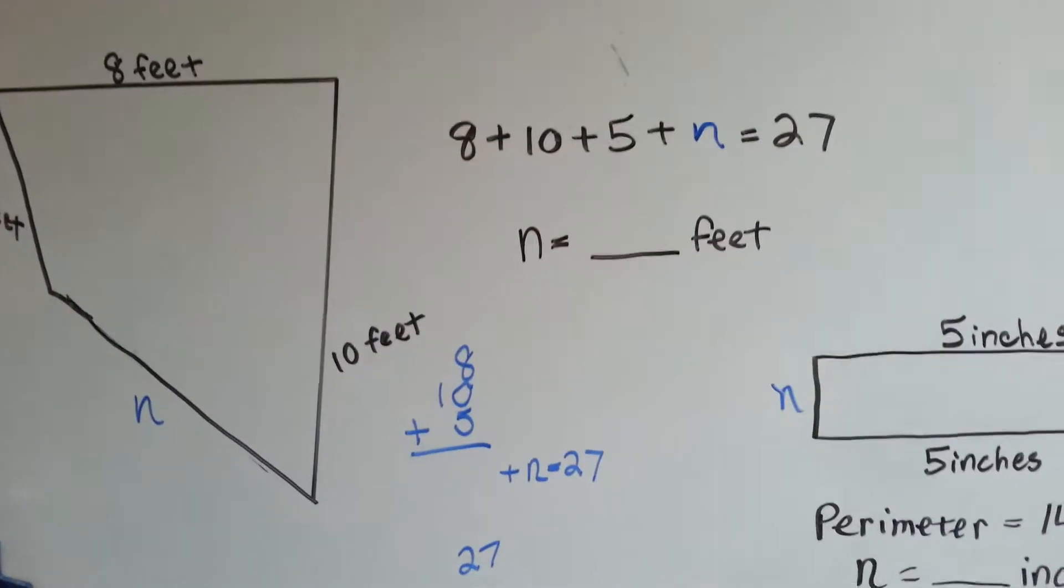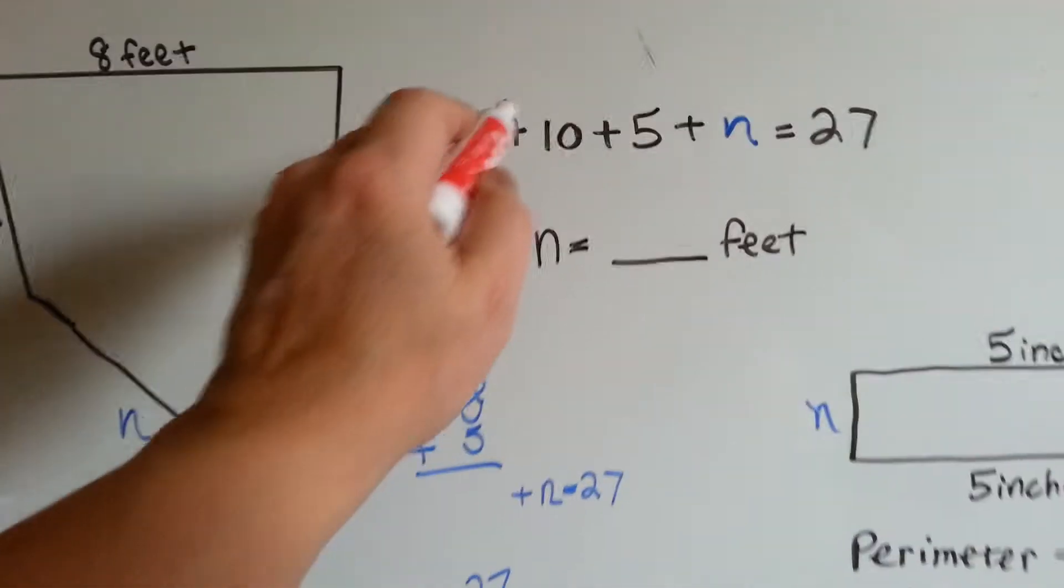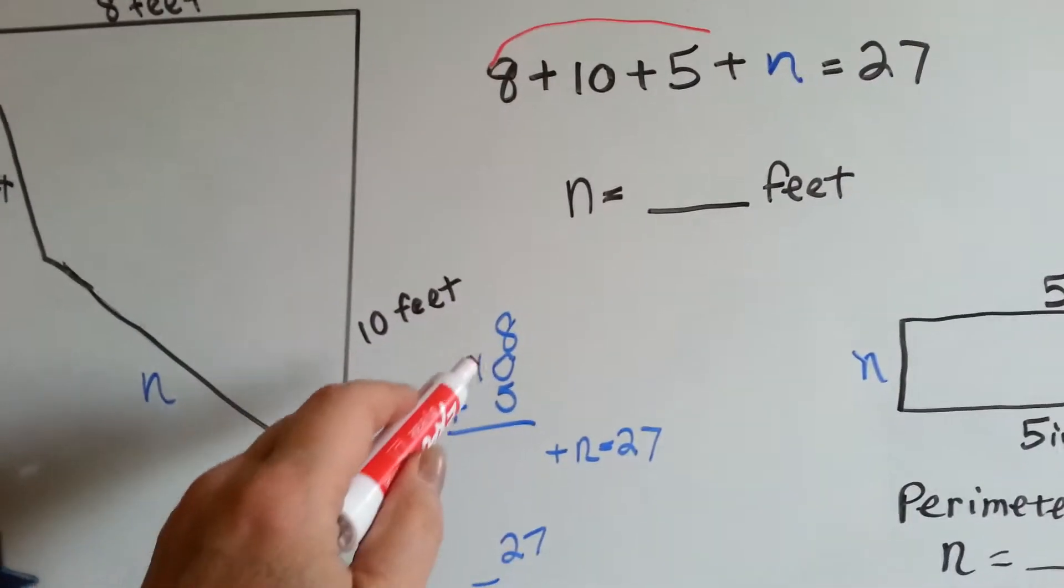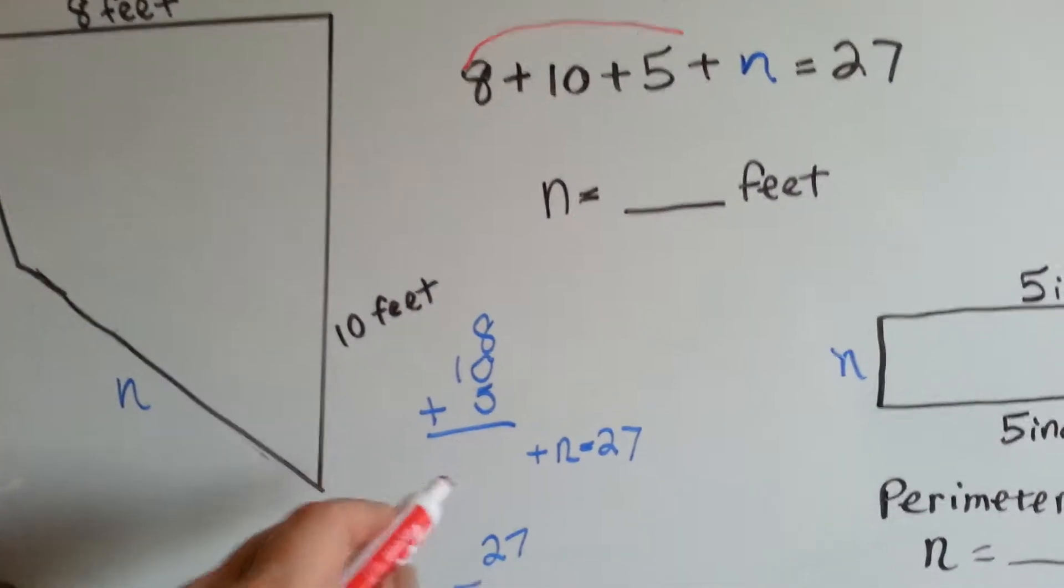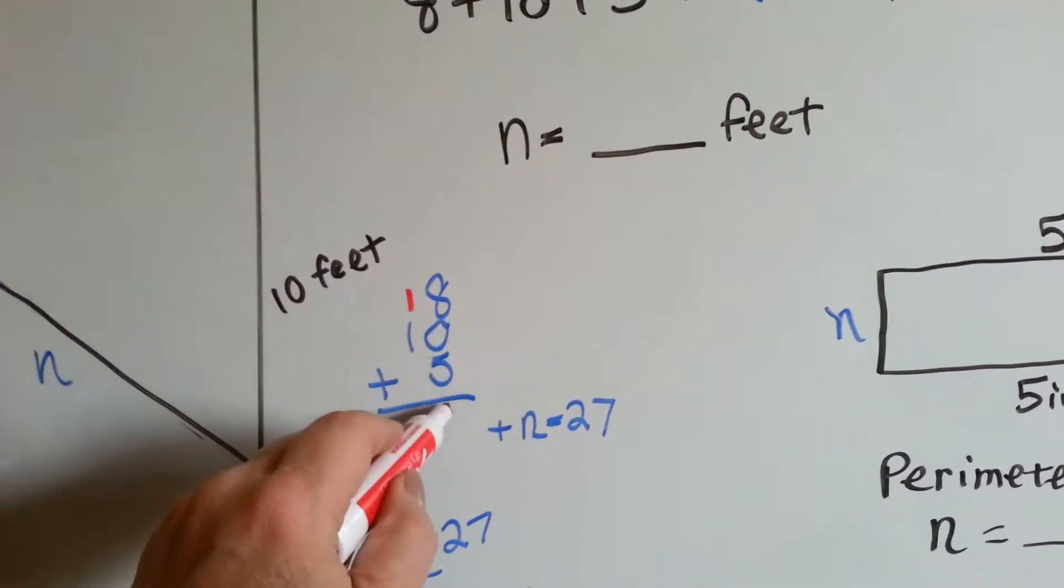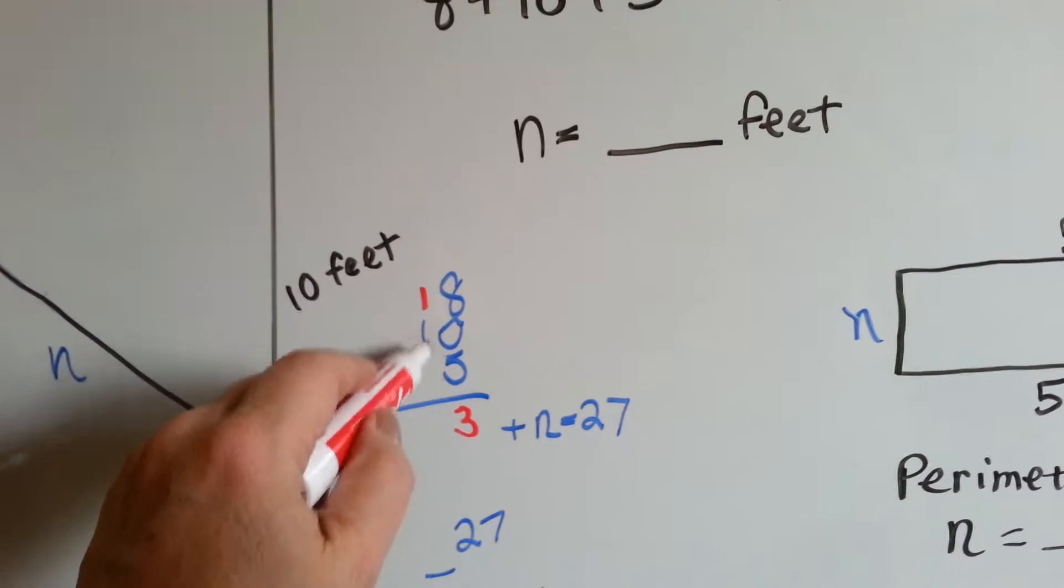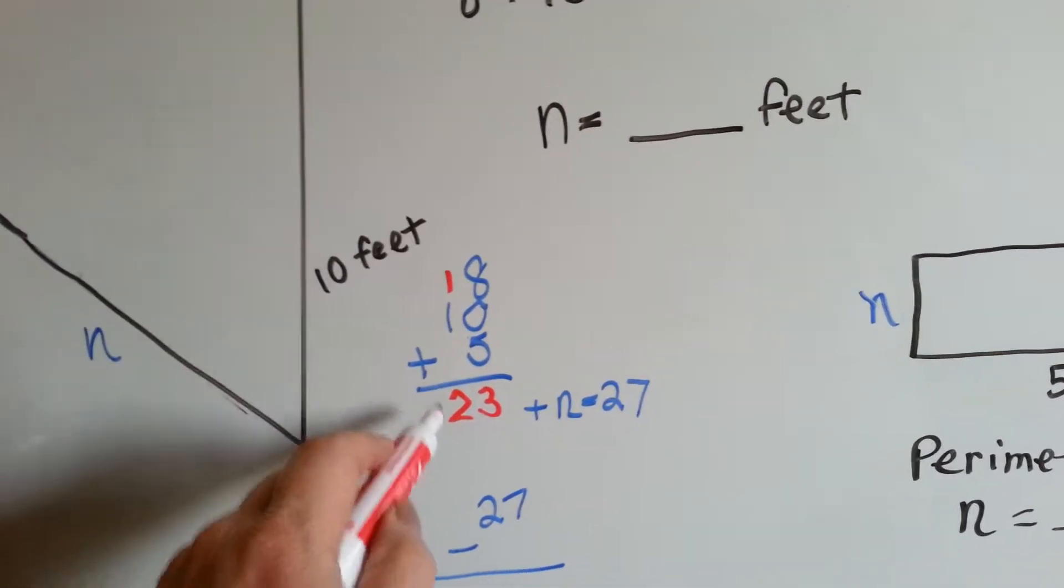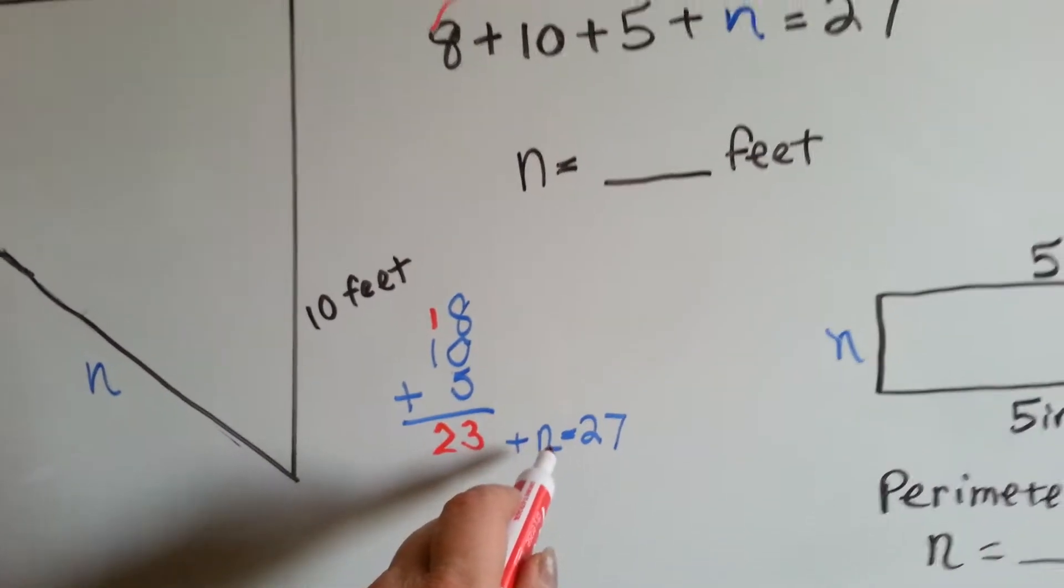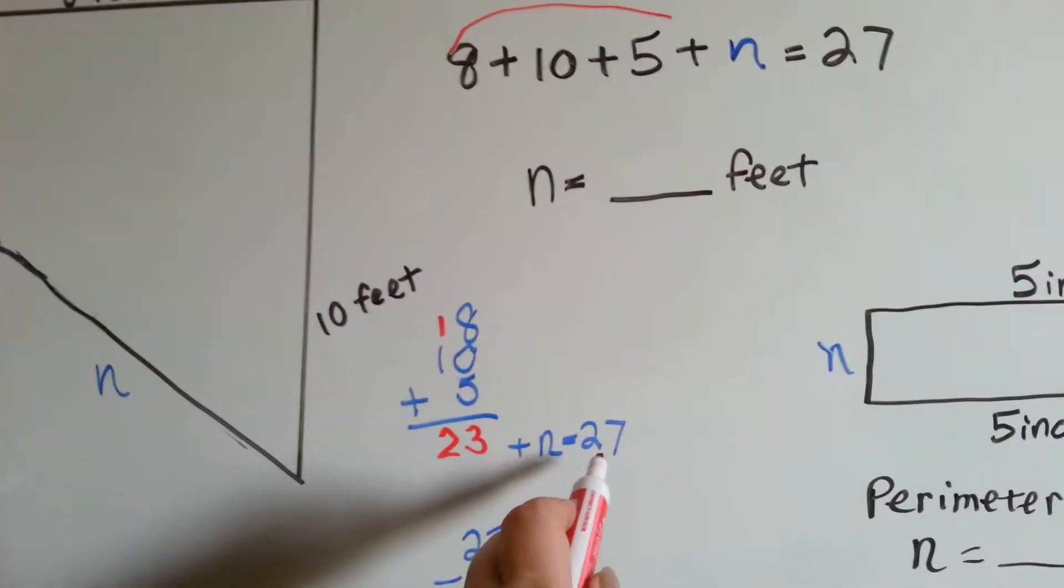Now what do we need to do? We need to add these three numbers, the 8, the 10, and the 5. Let's do that. 8 and 0 and 5 is 13. 1 and 1 is 2. That totals 23. So 23 plus n equals the 27.